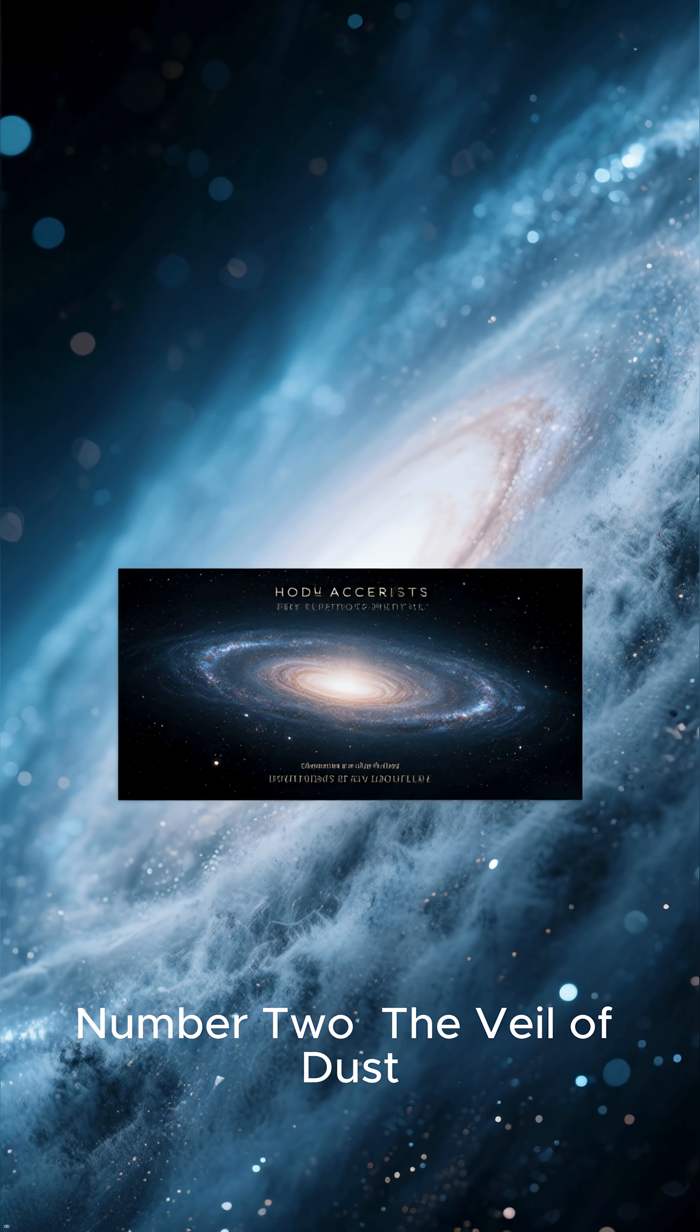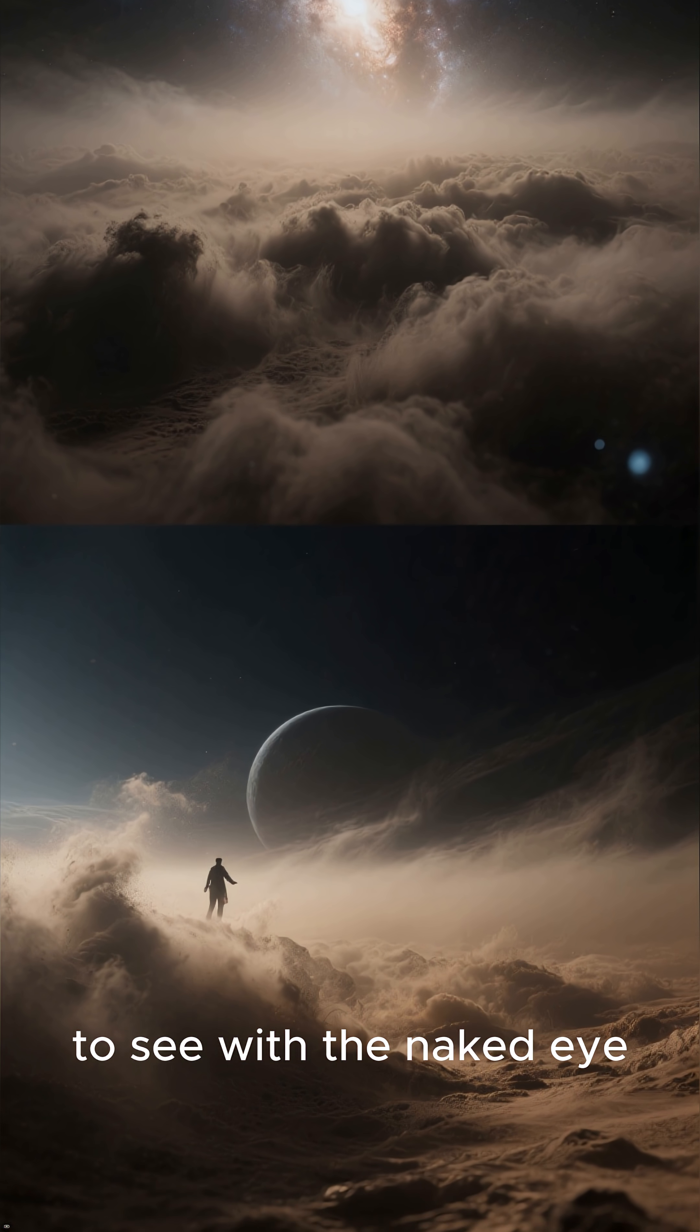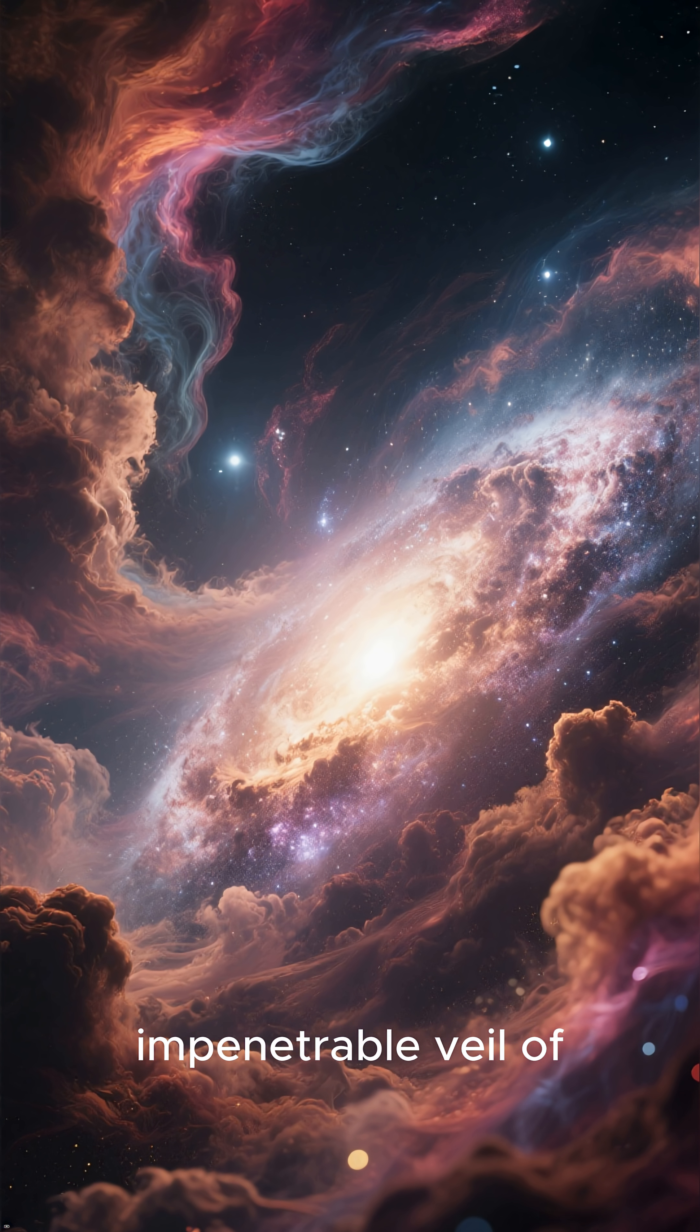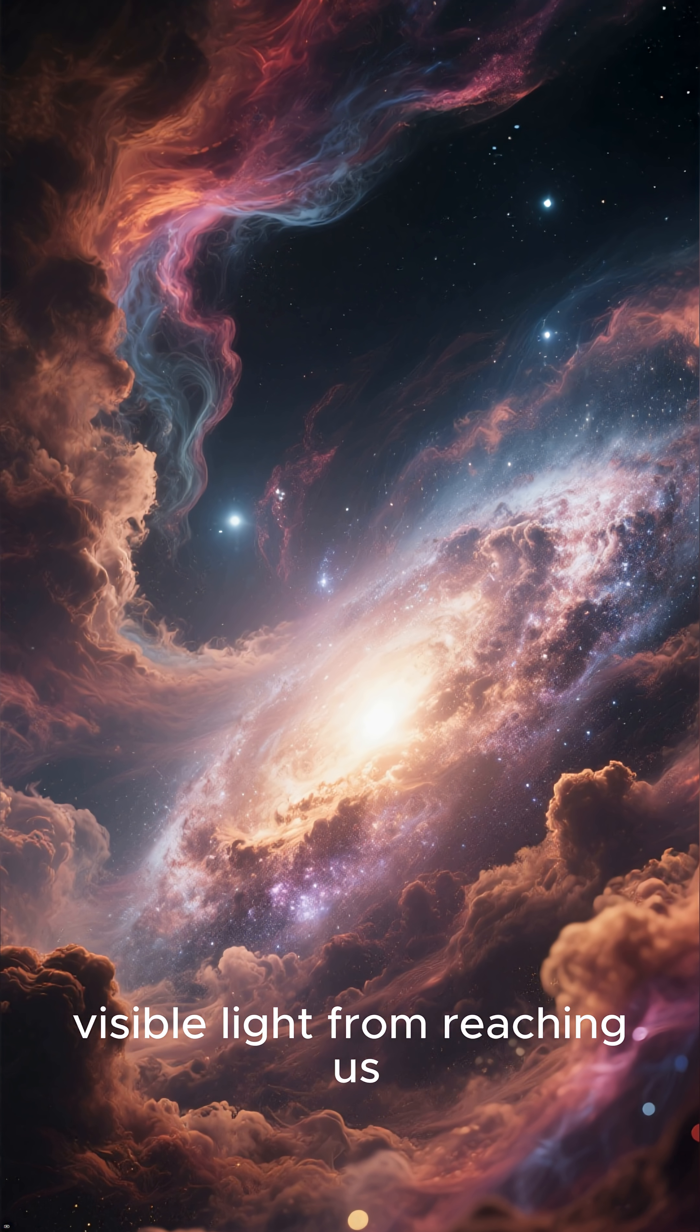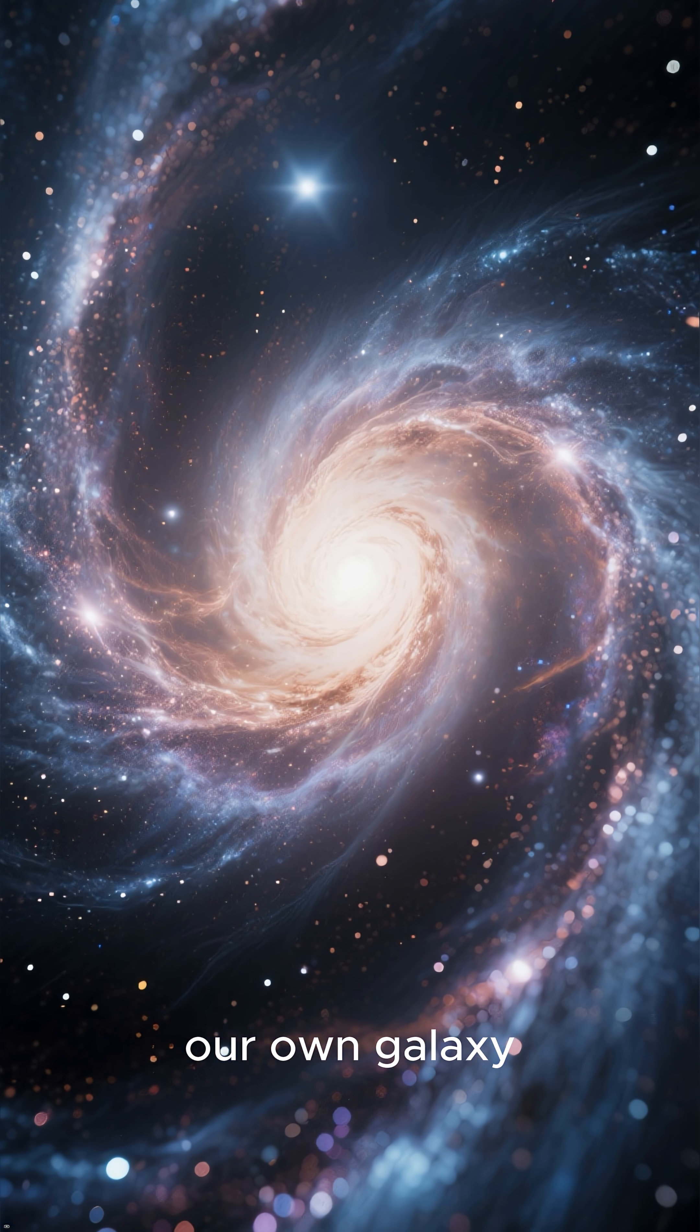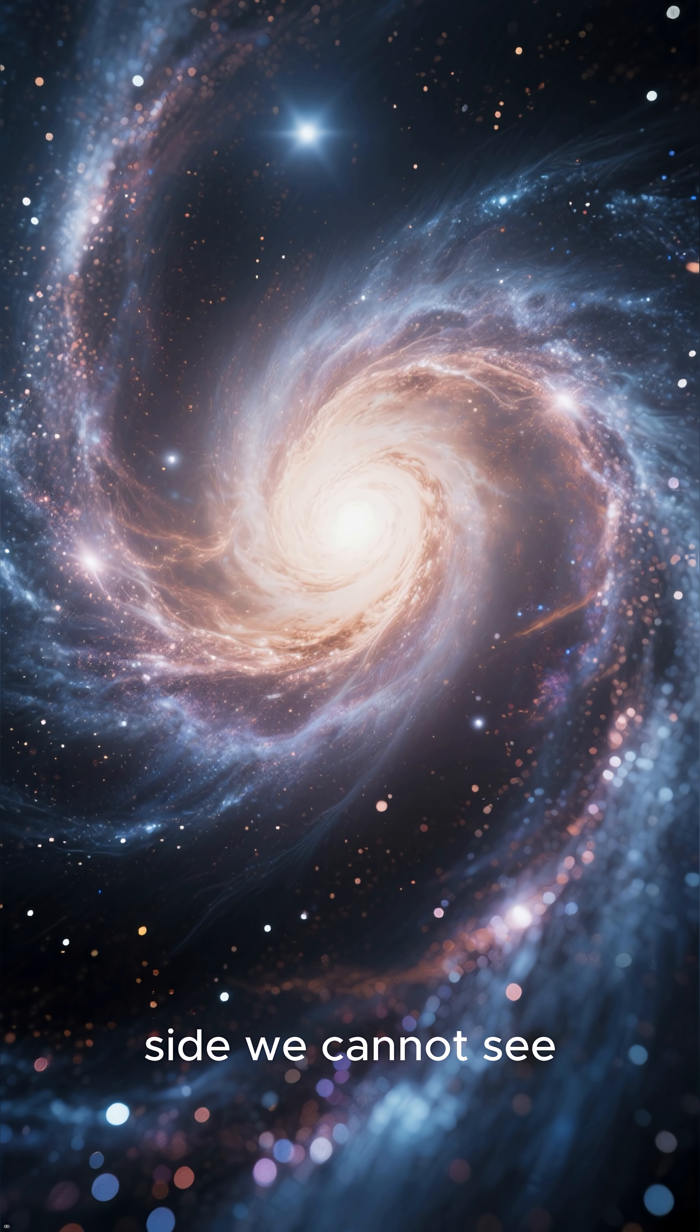Number 2. The Veil of Dust. The most unsettling aspect of our galaxy's heart is that it is impossible to see with the naked eye. The core is hidden behind a thick, impenetrable veil of interstellar dust and gas that blocks visible light from reaching us. This means we are trapped inside our own galaxy, unable to fully comprehend the terrifying secrets that may lurk on the side we cannot see.